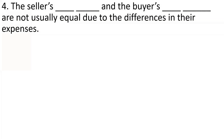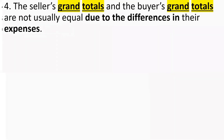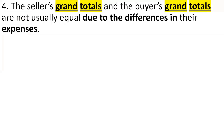Number four: The seller's grand total and the buyer's grand total are not usually equal due to the differences in their expenses. The buyer has the greatest expense because the buyer is actually purchasing the property. The seller will have some expenses too — taxes, broker's commission, and closing costs — but their grand totals will not be equal.